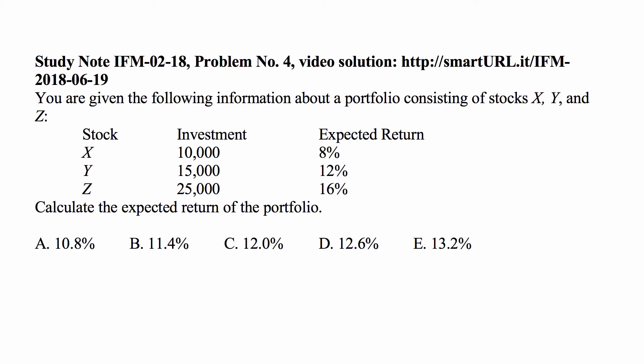Here's the problem for today. For exam IFM — investments in financial markets — you are given the following information about a portfolio consisting of stocks X, Y, and Z. The investment in stock X is 10,000 with an expected return of 8 percent. Investment in stock Y is 15,000 with an expected return of 12 percent. Investment in stock Z is 25,000 with an expected return of 16 percent. Calculate the expected return of the portfolio.